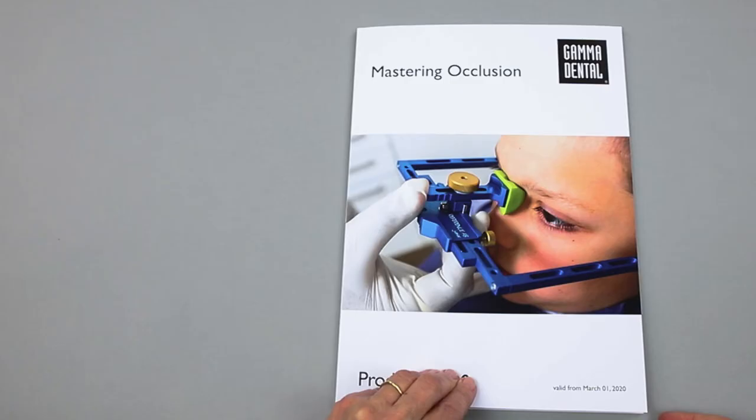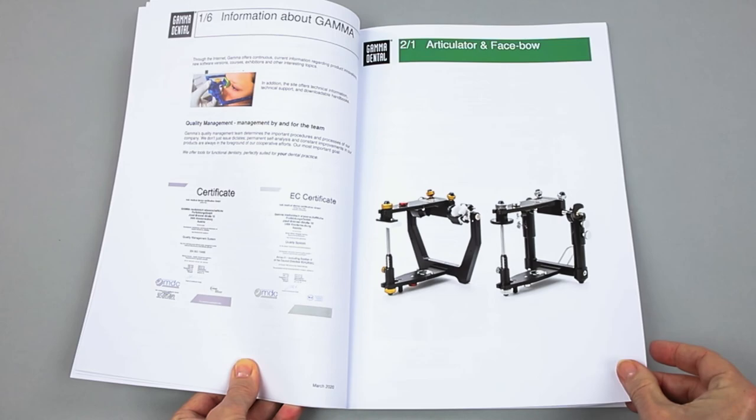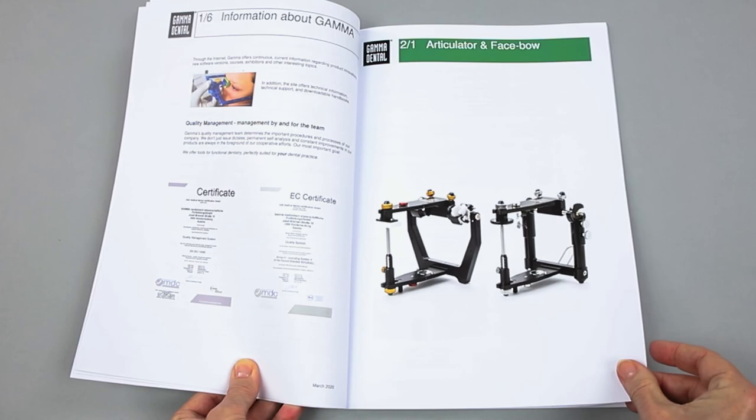A comprehensive product catalog is provided through our distribution channels. The catalog can also be downloaded from our website www.gammadental.com. Further Gamma tutorials will explain these features in detail. Thank you for watching.